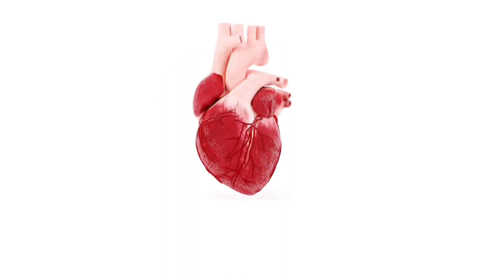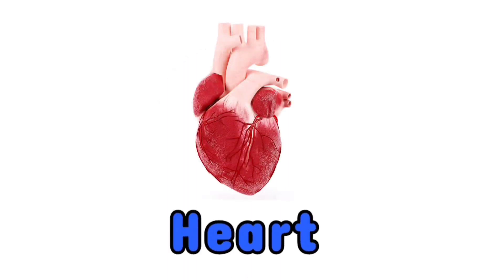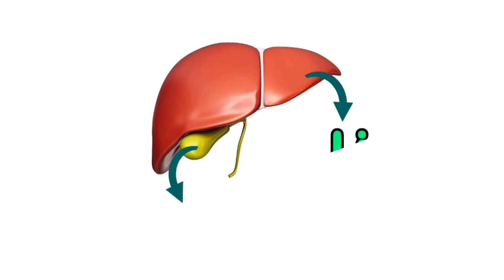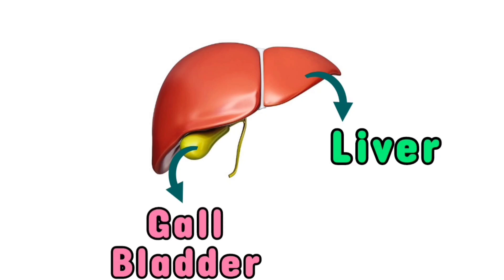This is your brain. This is heart. This brown organ is liver. And this green one, gallbladder.